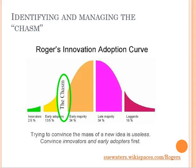For example, you started a one-to-one program and you're supposed to start on October 1st. You begin passing out devices and suddenly the network blows up. Things have been going great and then you've got a technical problem that slows everything down. The chasm is that point where the adoption process hits a wall, where the whole process just slows down.